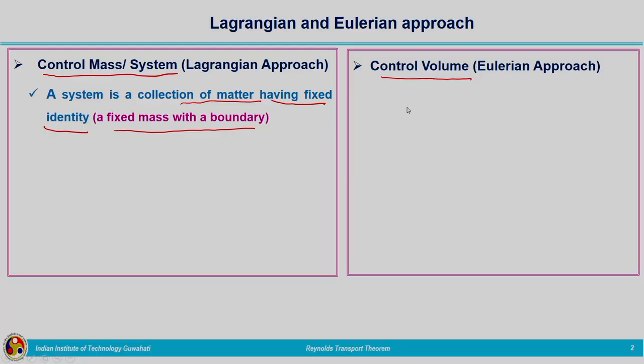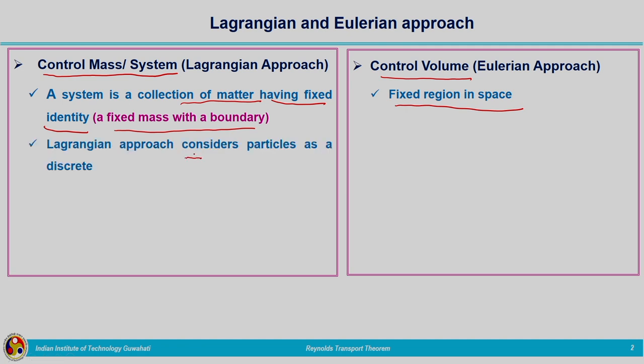In the case of the Eulerian approach, we are not interested in the entire flow path of the fluid particle. We fix a frame of reference and with that frame of reference we analyze the fluid flow properties and study the fluid flow characteristics. In the Eulerian perspective, the control volume is the fixed region in space, and we consider the fluid phase as a continuum rather than discrete particles.